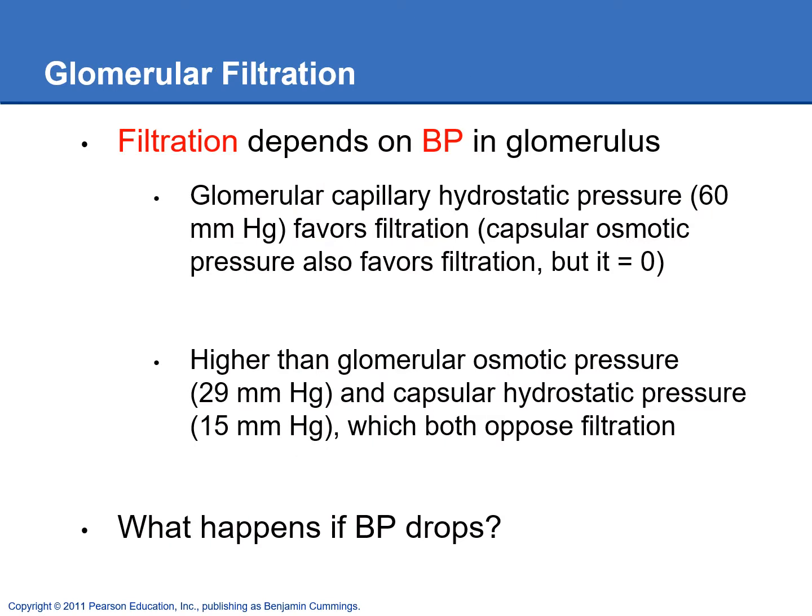The amount of glomerular filtration that occurs depends on the blood pressure in the glomerulus. If blood pressure increases, you filter out more plasma and make more filtrate and more urine. If blood pressure drops, you filter out less plasma and make less filtrate and urine. If blood pressure gets really low, you actually stop glomerular filtration — this is what happens when the kidneys shut down in acute renal failure. You end up unable to filter the blood at all, producing no urine, and waste products build up.